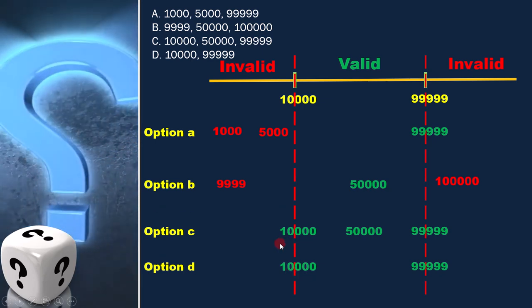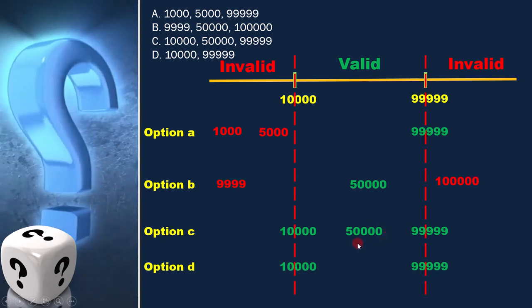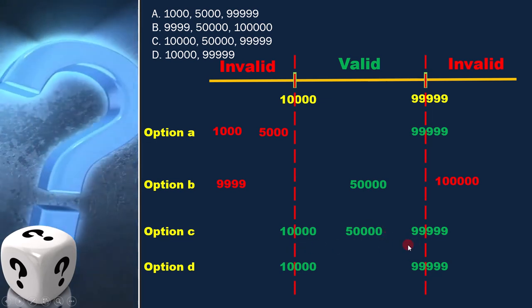The reason is with option C we are validating valid equivalence classes. Therefore option C is the correct answer.